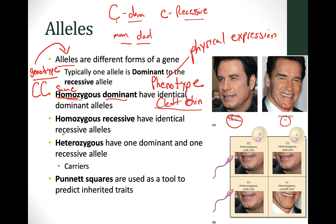The next possibility is homozygous recessive. They're going to be the same — homo — but instead of two capital C's, we have two little c's. The genotype is little c, little c. The phenotype will be an uncleft chin — no cleft chin.